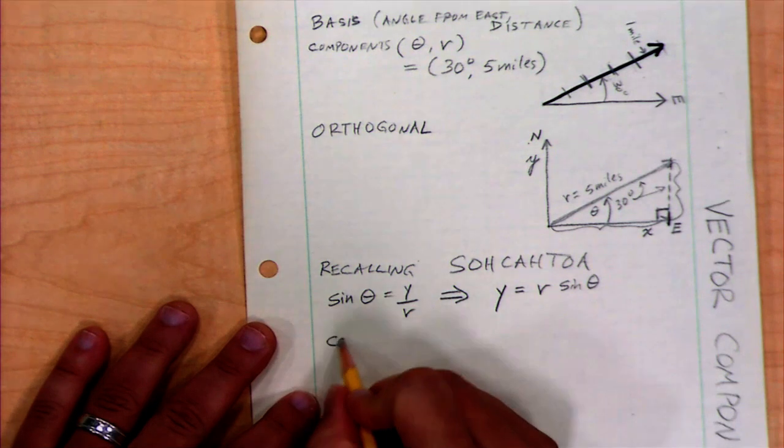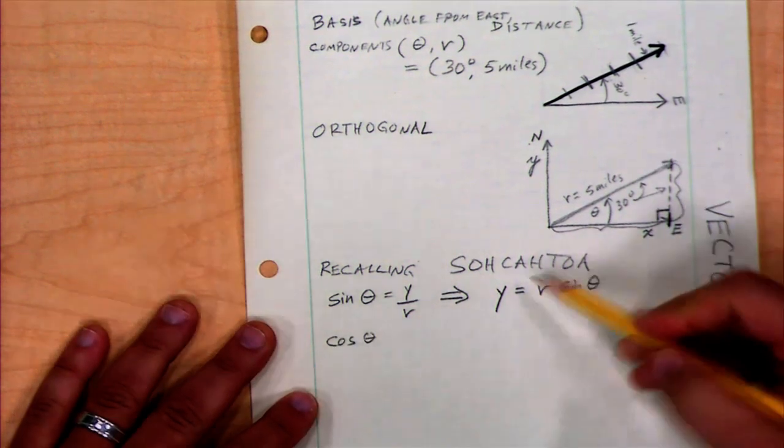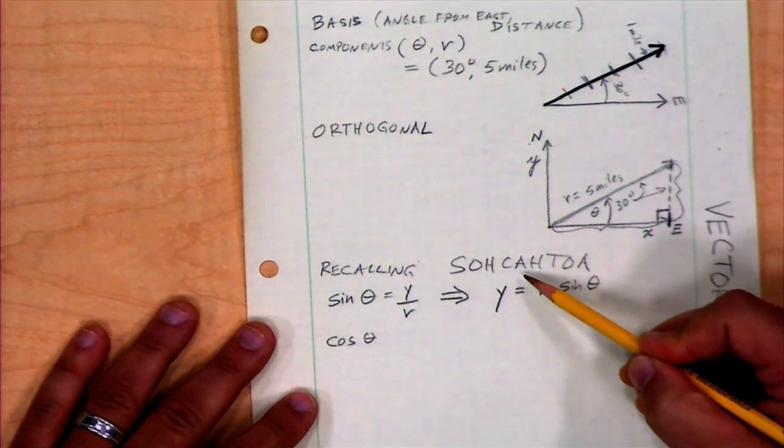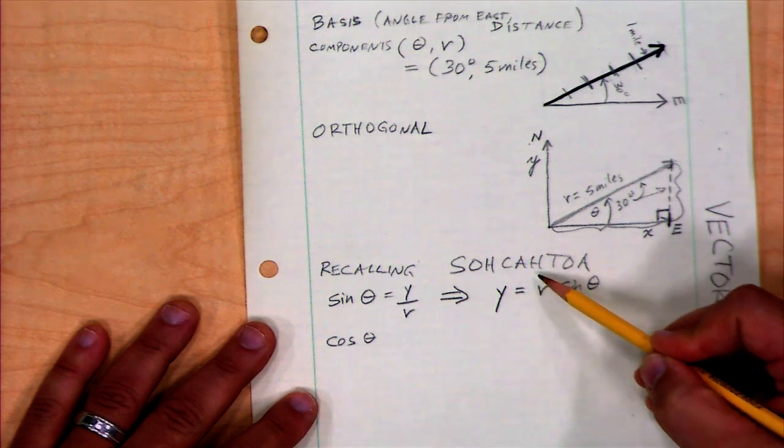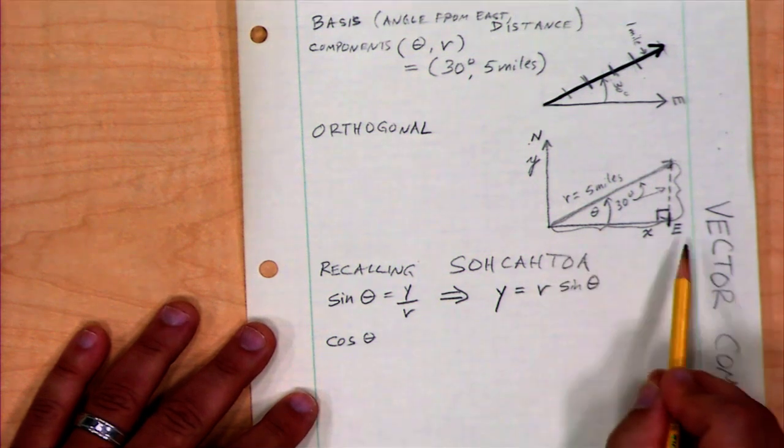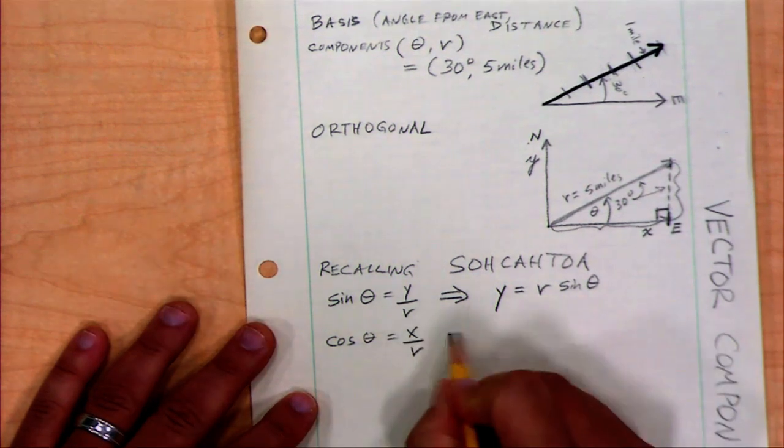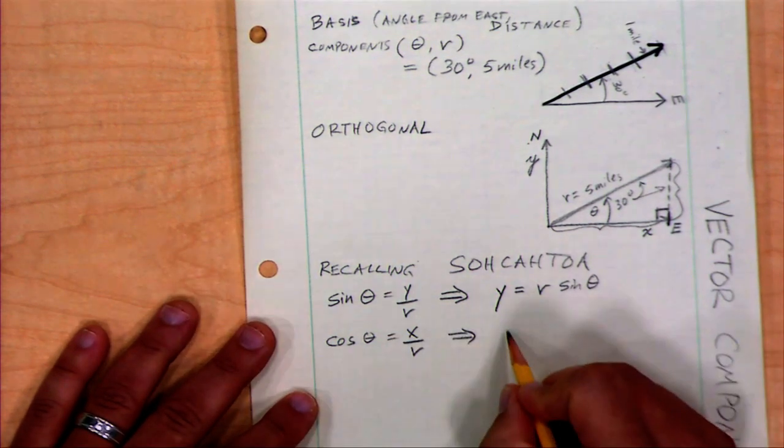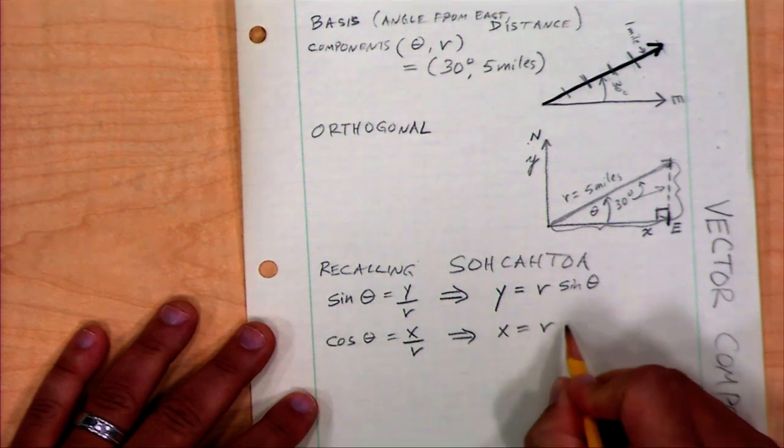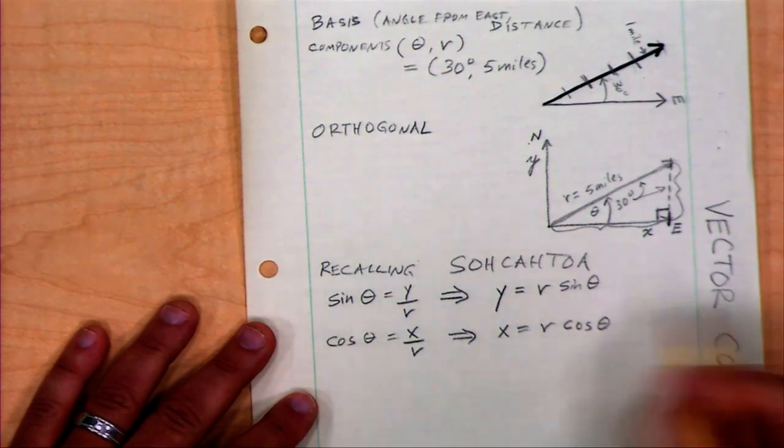Similarly, the cosine of theta is the adjacent side divided by the hypotenuse. Well, the adjacent side is component x over r. Again, doing some algebra, x is equal to r cosine of theta.